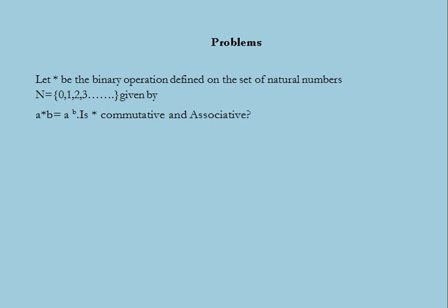Finally we consider a problem based on binary operations and their properties. The problem states: let asterisk be the binary operation defined on the set of natural numbers N = {0, 1, 2, 3, ...} given by A * B = A^B. We have to determine whether the binary operator asterisk is commutative and associative or not.